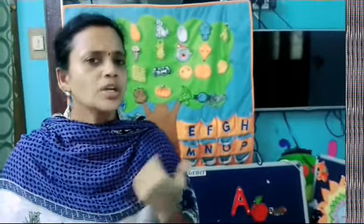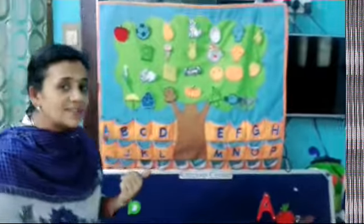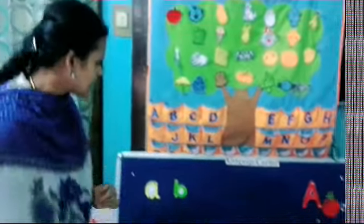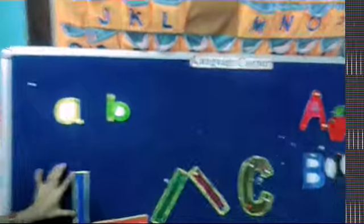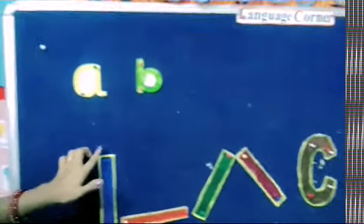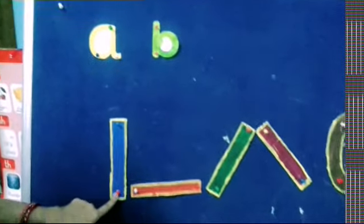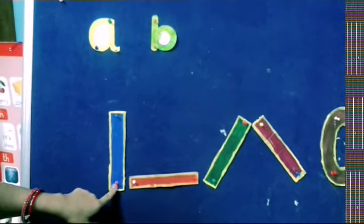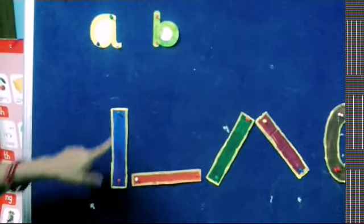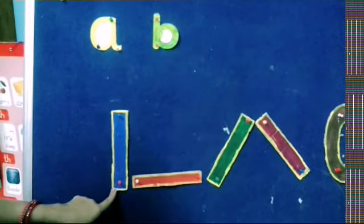Okay kids, in the last class, what are the patterns we had seen? Let's revise once again. What is this line? Top to bottom — standing line. Very good. Top to bottom, standing line.